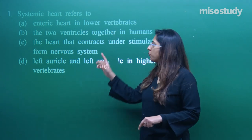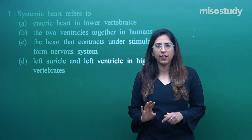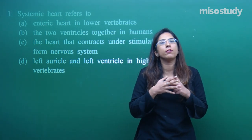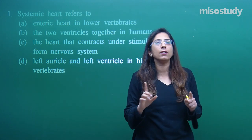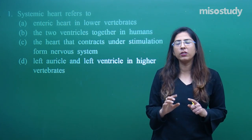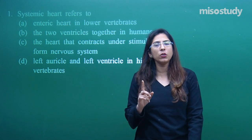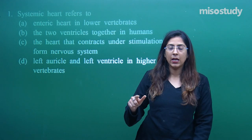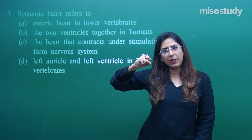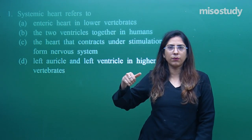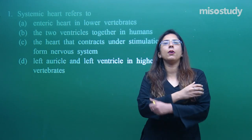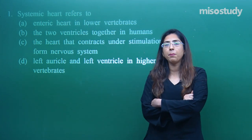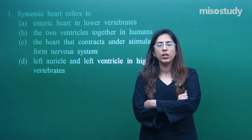In systemic circulation, the heart and various other parts of the body are involved, except the lungs. They pump and supply blood to the various parts of the body. In pulmonary circulation, on the contrary, the lung is also involved.